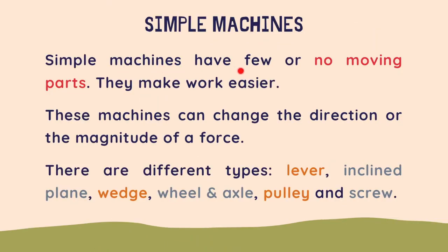Simple machines have few or no moving parts. They make work easier. These machines can change the direction or the magnitude of a force. And there are different types: a lever, an inclined plane, wedge, wheel and axle, a pulley and a screw. Let's have a look at all of them.